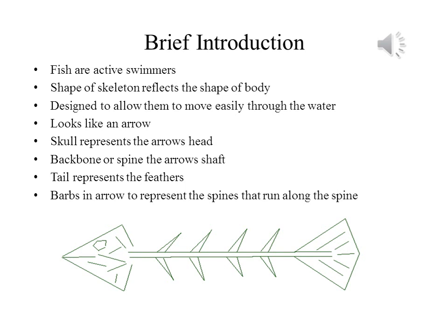Thus, the skeleton of an average bony fish looks like an arrow, where the skull represents the arrowhead, the backbone or spine represents the arrow's shaft, and the tail represents the feathers. If we add a few barbs to our arrow to represent the spines that run along the spine, we have a fairly good idea of the basic fish skeleton.